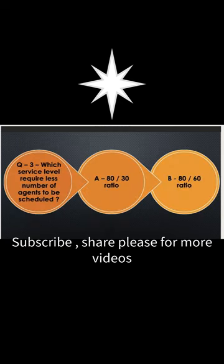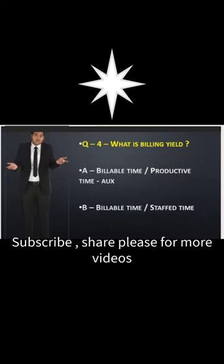The correct answer is B, 80/60. Then, what is billing yield? The correct answer is that billing yield equals billable time divided by productive time minus aux.